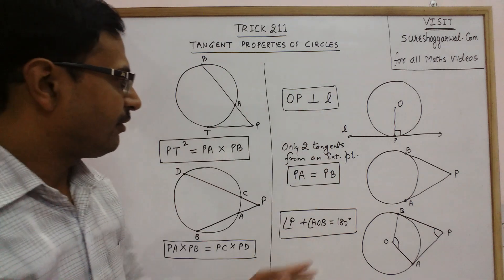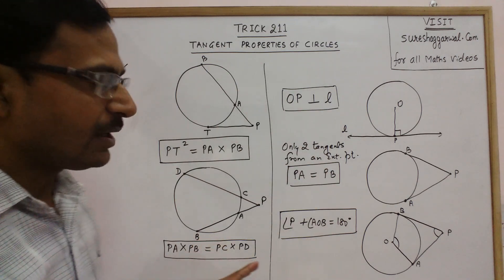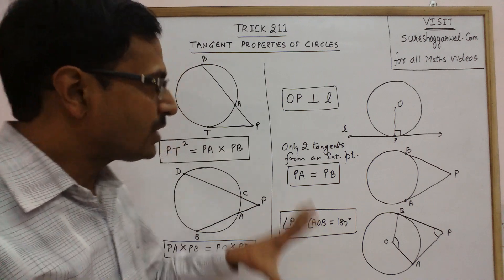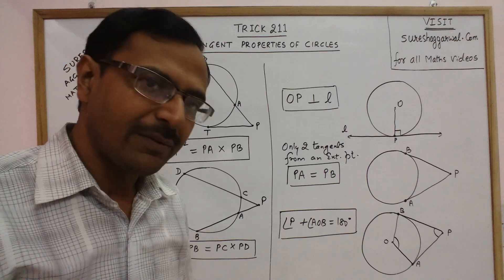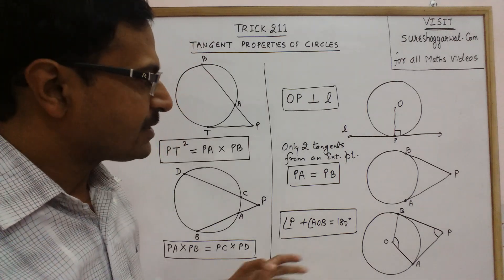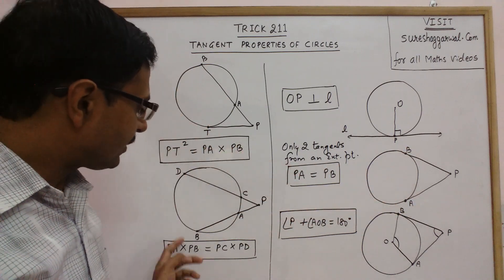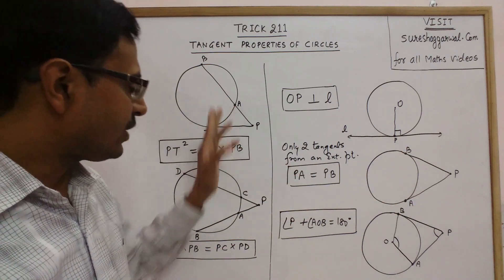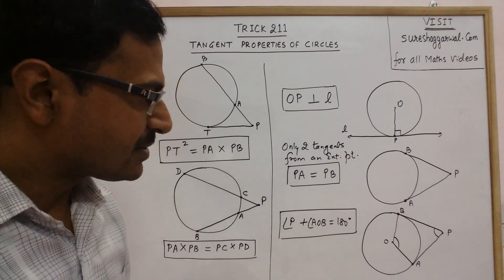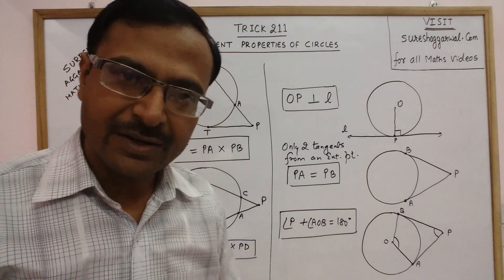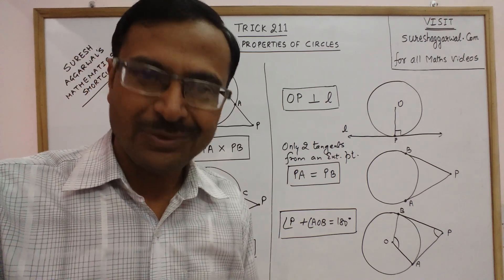So these are five very important properties of a circle and tangent. Using these properties you can solve a number of problems which come in competitive exams — finding particular angles, the length of a tangent, or a particular length when a tangent and a secant or two secants are given. Keep learning these amazing geometry videos for better understanding of the geometry portion, and share and subscribe to the channel if you like it.